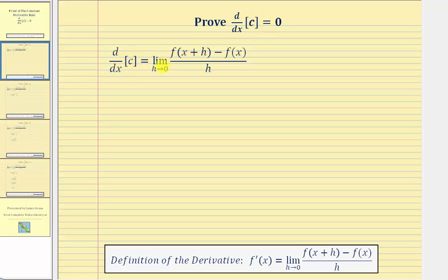We know the derivative is equal to this limit definition. In this case, the function f of x is equal to the constant c.